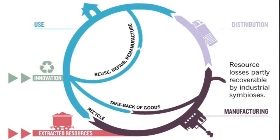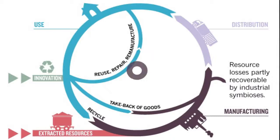You can, for example, do this through repair, resale or technical upgrade. Most products are not meant to last forever. Therefore, the second loop is more material-specific. It focuses on material recycling, for example, recycling cotton or wool.